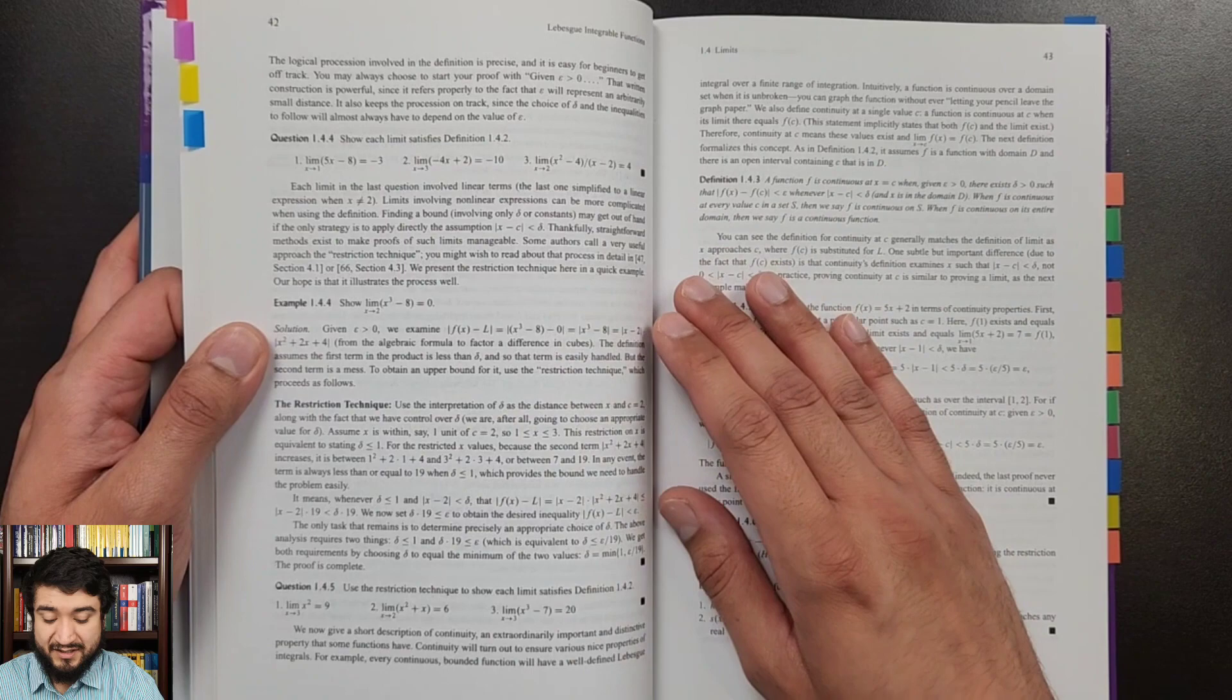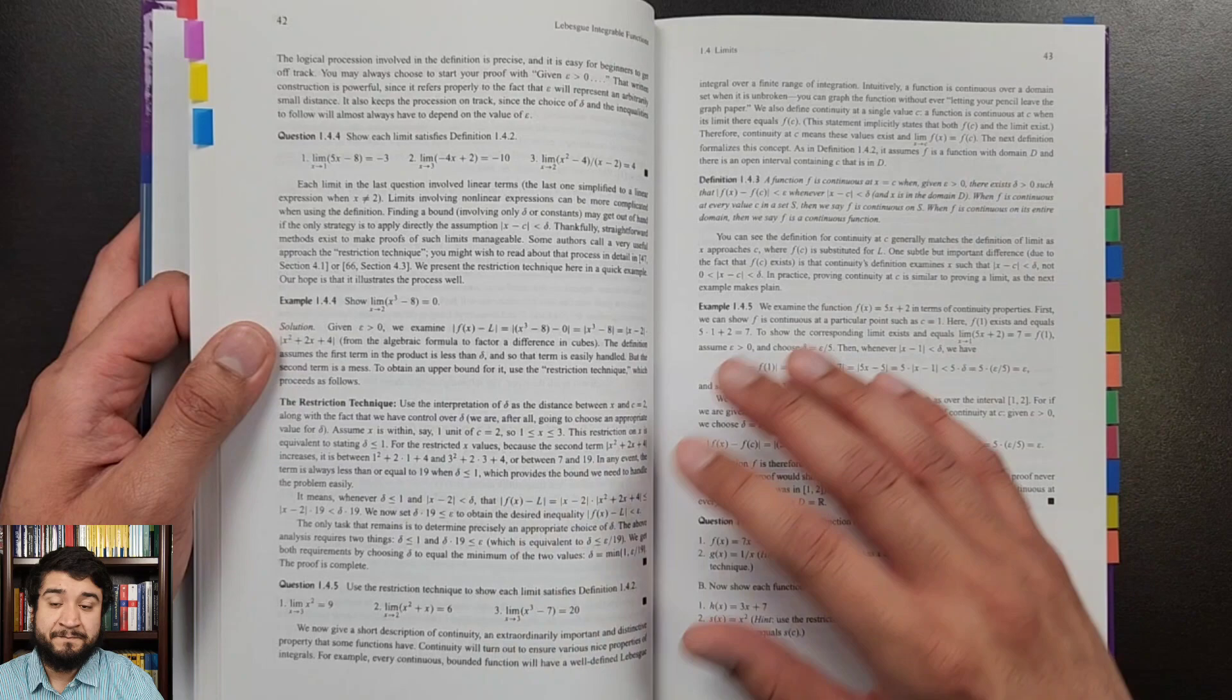It really just depends on what book you're using. If you're using a book like Rudin, then absolutely not. This book and Rudin's book are completely different. They have different goals. This cannot substitute that one and that one cannot substitute this one either.